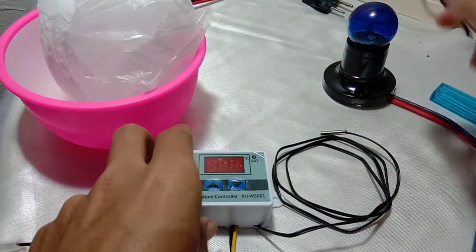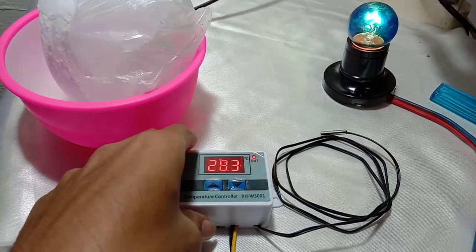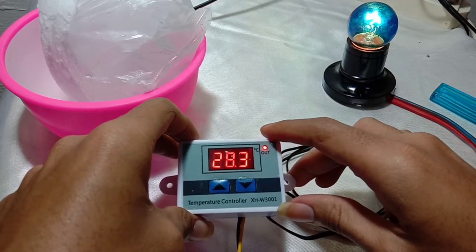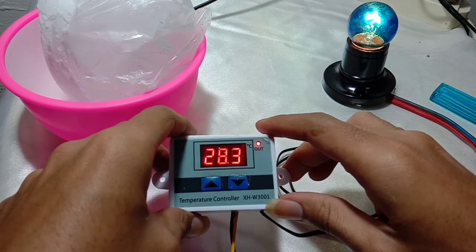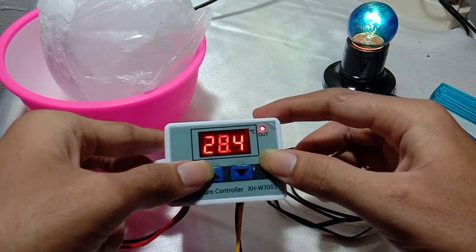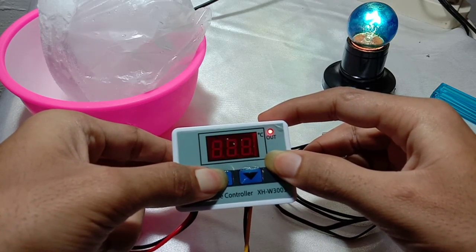Now let's try it. This digital thermostat can be used as a heating controller and also it can be used for cooling. We are going to set it for heating first.